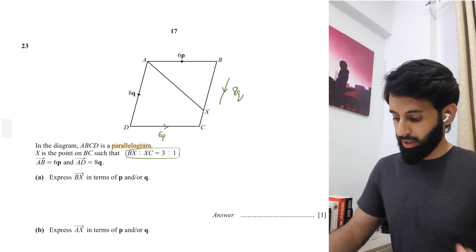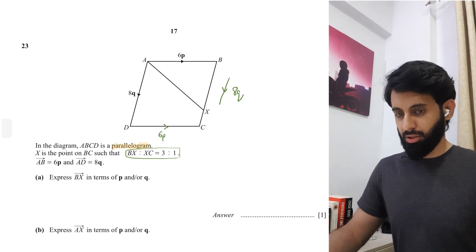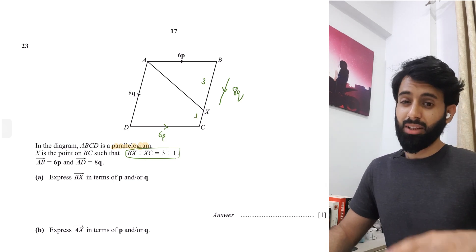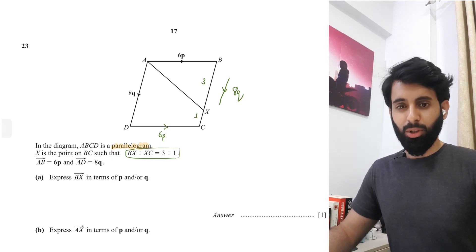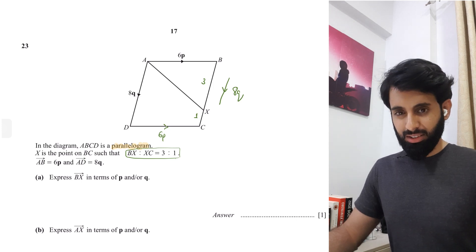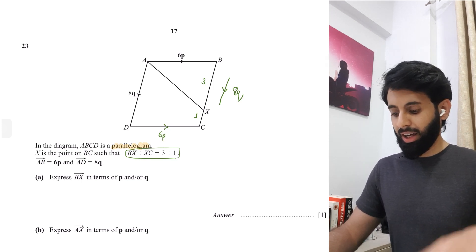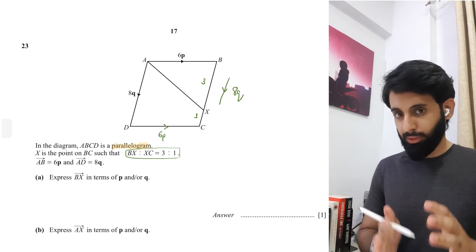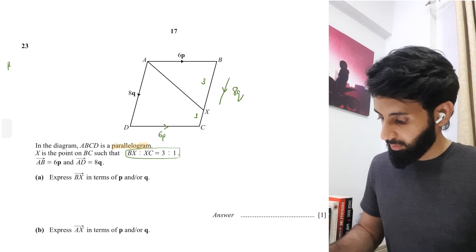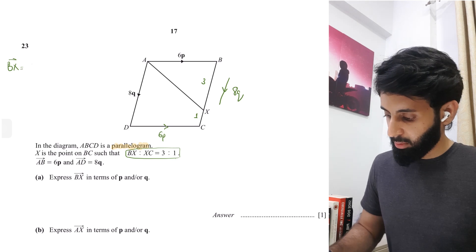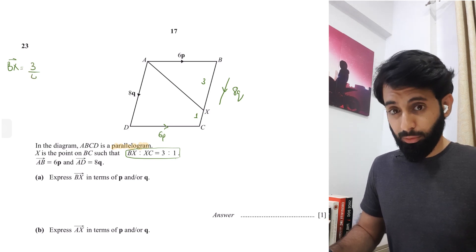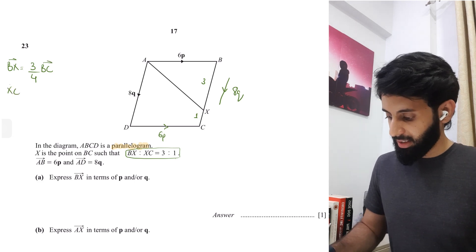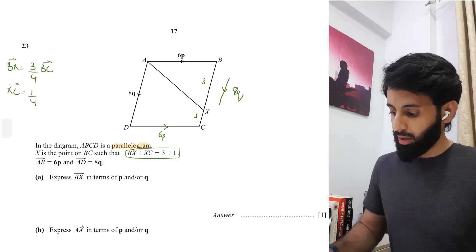BX and XC in the ratio 3 is to 1 basically means that BX is 3 parts and XC is 1 part. That means this entire length has been broken down into 4, and BX takes 3 parts while XC takes 1 part. If I want to write it as a fraction of the total, BX is going to be 3 upon 4 of BC, and XC is going to be 1 fourth of BC.